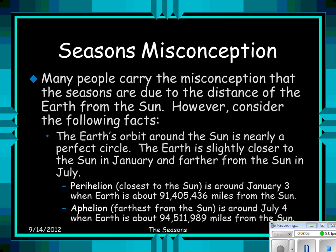Season misconceptions. Many people carry the misconception that the seasons are due to the distance of the Earth from the Sun. However, the Earth's orbit is nearly a perfect circle. Perihelion — closest to the Sun — is around January 3rd at about 91,405,436 miles. Aphelion — farthest from the Sun — is around July 4th at about 94,511,989 miles.